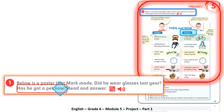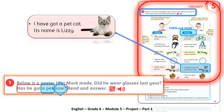Moving to the second question: has he got a pet now? We go to the 'now' column of the poster and search for the word 'pet' or a picture of a pet. Reading that part: 'I have got a pet cat, its name is Lizzie.' So the answer is yes, he has.